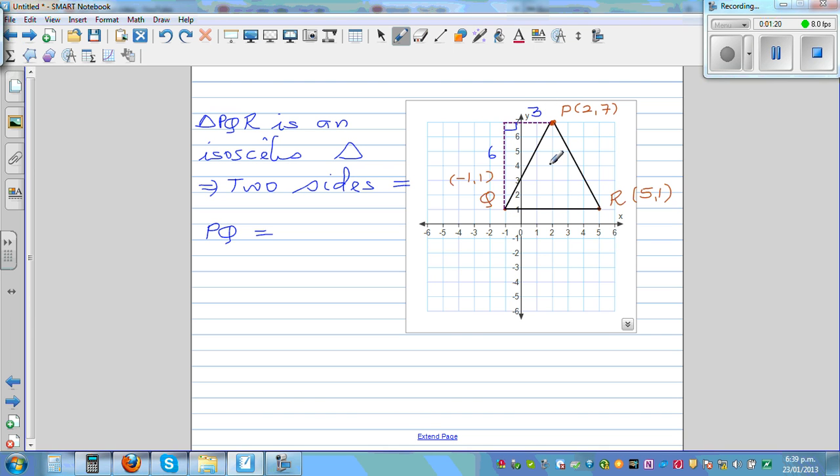Using Pythagoras, PQ is the square root of 6 squared plus 3 squared, which is the square root of 36 plus 9, which is the square root of 45.